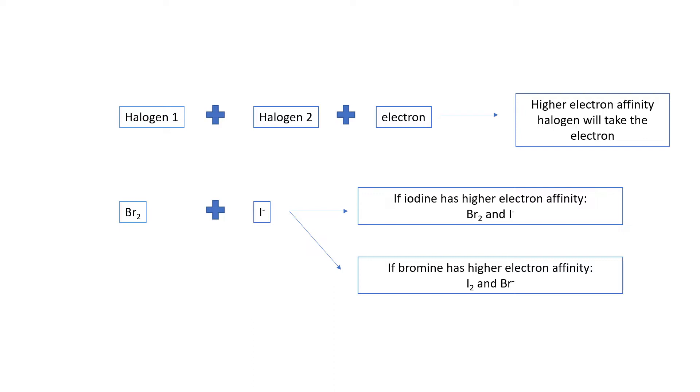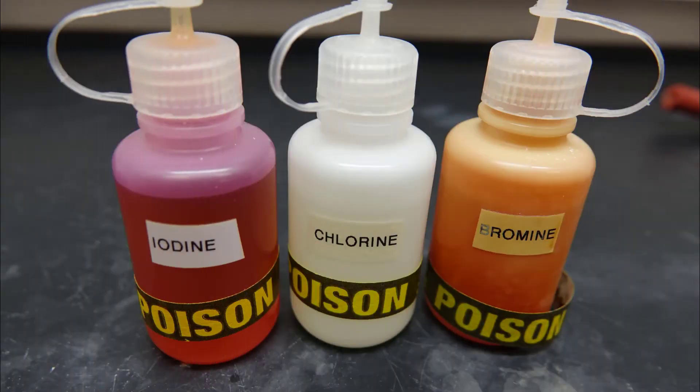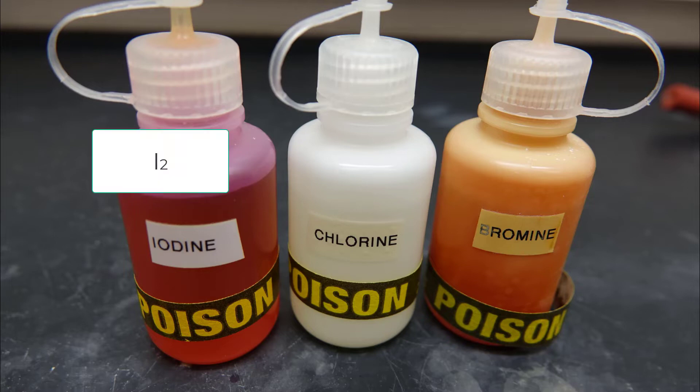The colored bottles labeled iodine, chlorine, and bromine are in molecular form: I2, Cl2, and Br2.